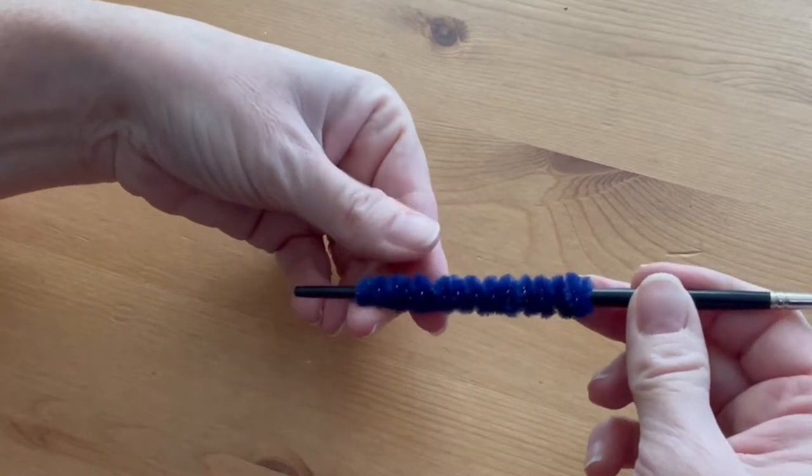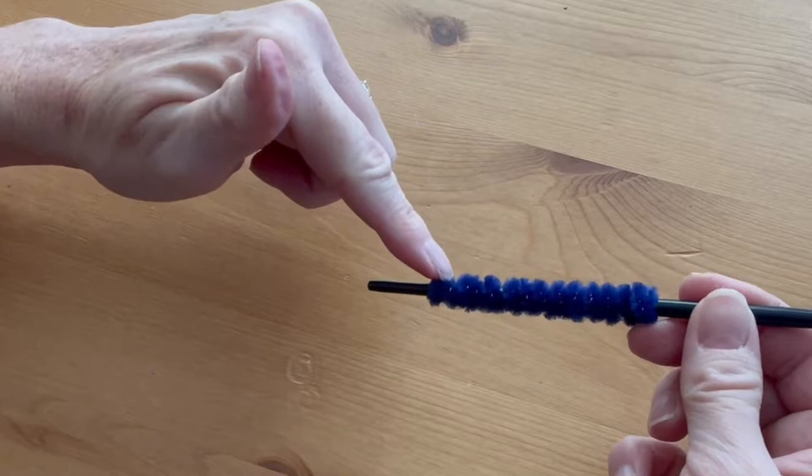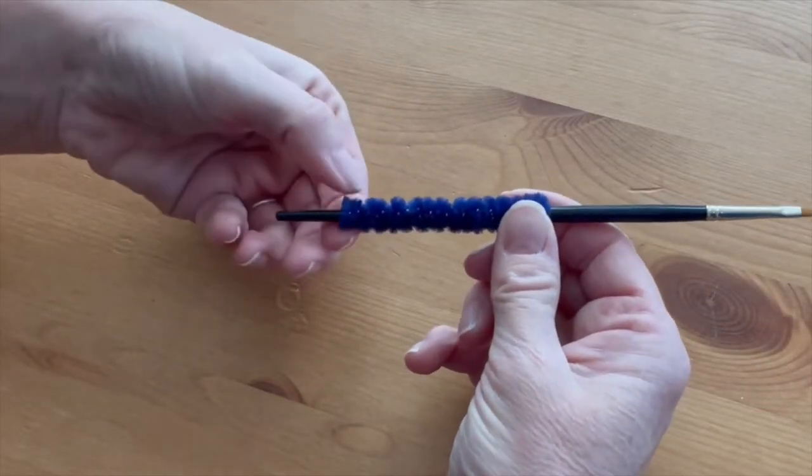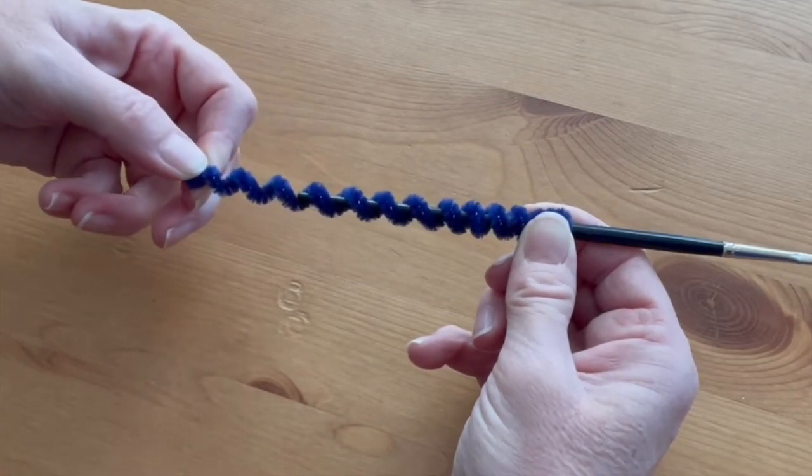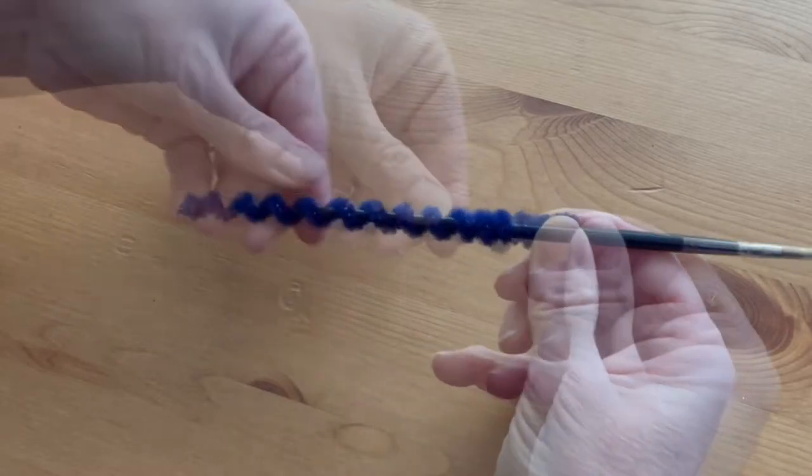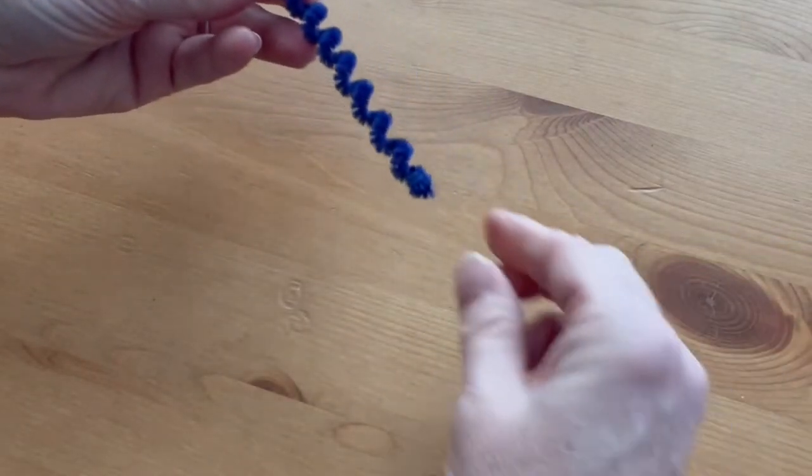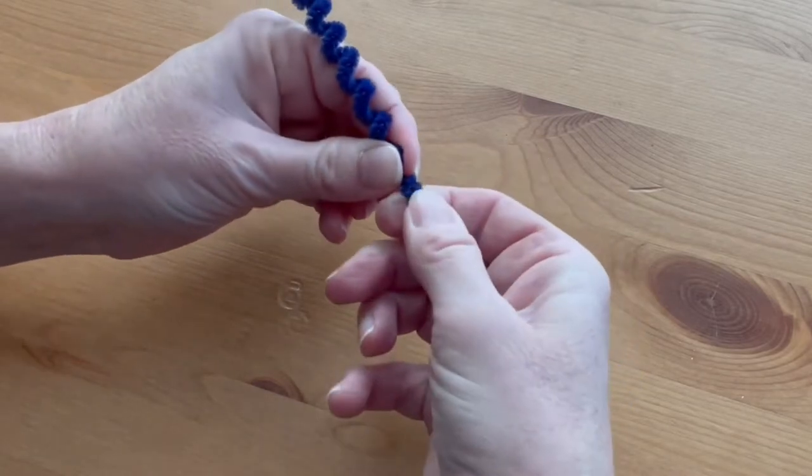Now we want to make the body longer. Hold onto the bundle that's the head and take the very end and pull the coil out to elongate it, keeping the head intact. Remove the paintbrush, and then take the bottom coils and twist them just a little tighter to make the end coils smaller.